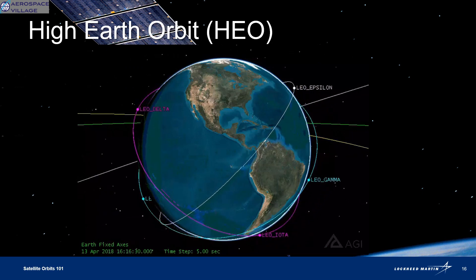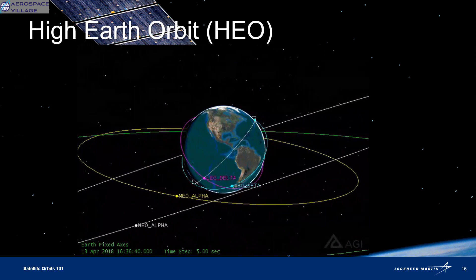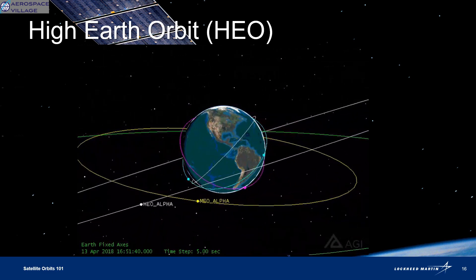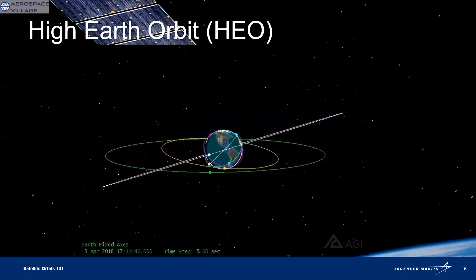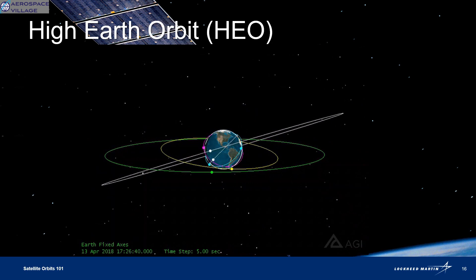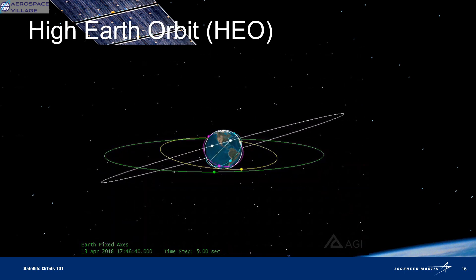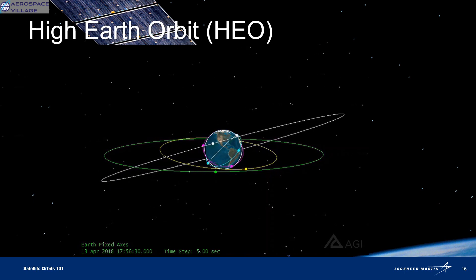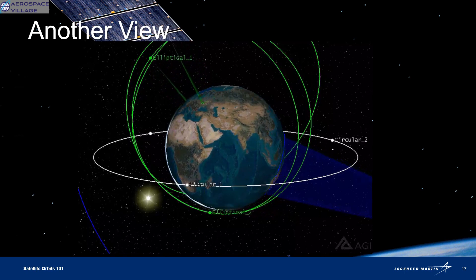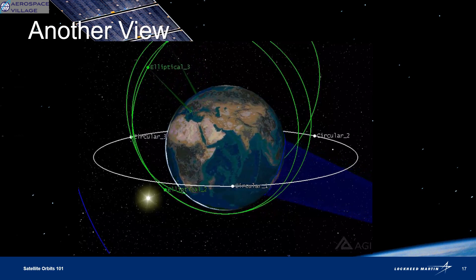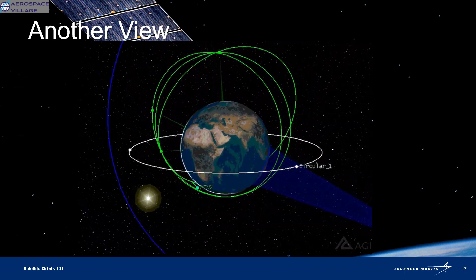Now let's put it all together. Here's another interesting view where you can see both circular and elliptical orbits at varying distances.